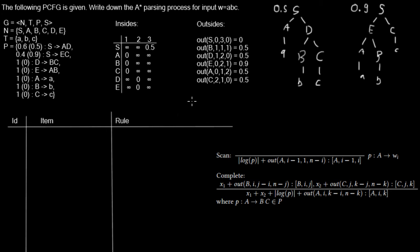Now let's start with the parsing process. Here we have our empty chart. The A* parsing is similar to the CYK algorithm — we have two rules: scan and complete. Because the chart is empty, the only thing we can do is scan. I will start with the first item, the terminal A at the first position. We need a rule where that terminal symbol is on the right-hand side, and this is the rule A expands to A.